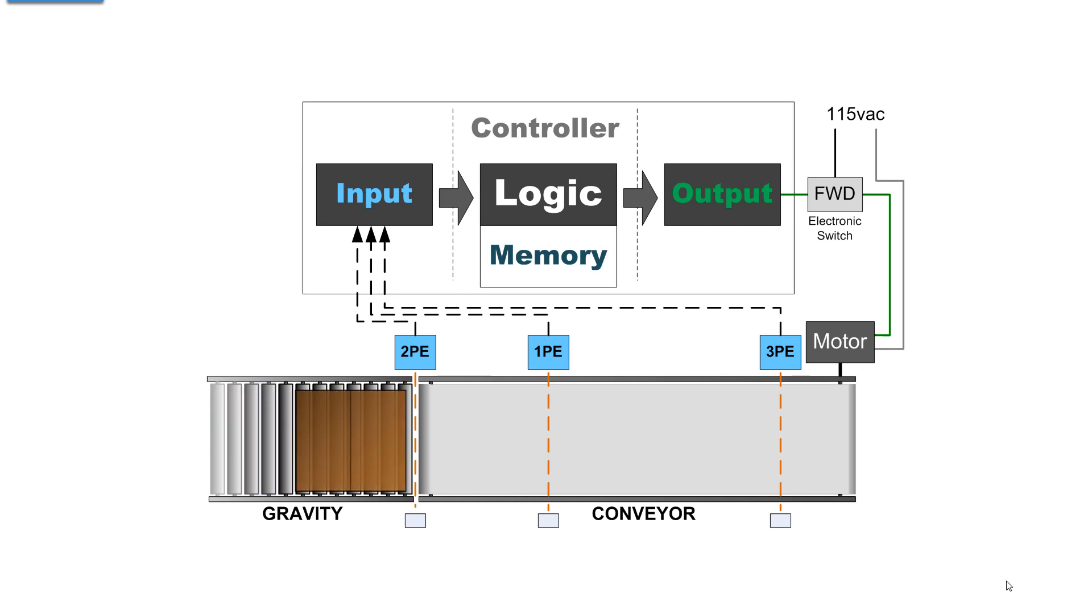So if we have a carton come down the gravity feed conveyor, 2PE, photo eye 2, tells the controller, tells the logic against whatever's in memory, that there is a carton available to come onto the conveyor. At that point, the conveyor can then pull the carton onto the conveyor.